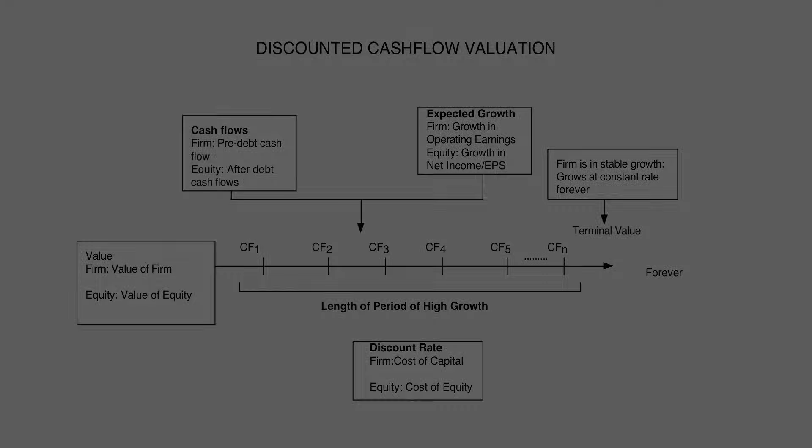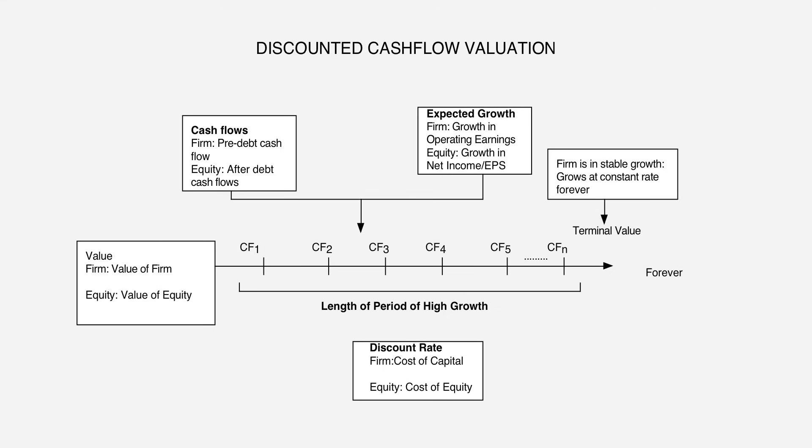Rather than value equity, you could try to value the entire business — valuing the assets on the balance sheet rather than the liability side. Those cash flows go to service both equity investors and lenders, so you look at the collective cash flows that both get out of the business. That cash flow is called the cash flow to the firm. The discount rate you use is a weighted average of what equity investors demand — the cost of equity — and what lenders demand — the cost of debt. In corporate finance, that weighted average is the cost of capital. Once you value the business, all you need to do is subtract out what you owe to get the value of equity.